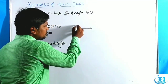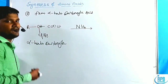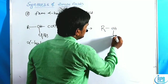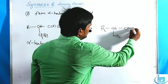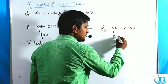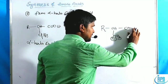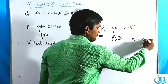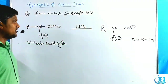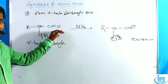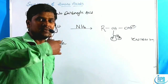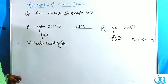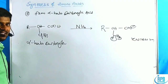These alpha halo carboxylic acids, in the presence of two moles (excess) of ammonia, give the product R–CH(NH₂)–COOH. The amino group appears as NH₃⁺ and the acid as COO⁻, forming a zwitterion. This is the second synthetic method for amino acids.